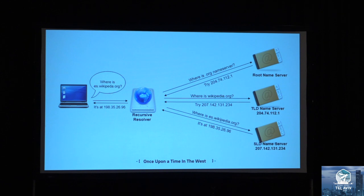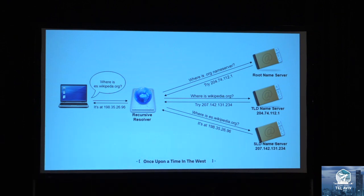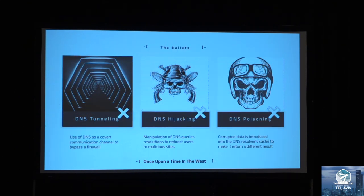Just so everyone is on the same page, we are not going to dig deep into how DNS works because of time constraints. But for those who don't know, it's basically a means to translate a domain name into an IP address where you can access the information — like a phone book where you ask for the name and get the number. The kinds of attacks we're going to review are DNS tunneling, DNS hijacking, and DNS poisoning — or as we call them here, the bullets.